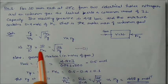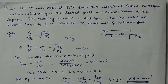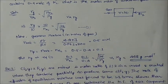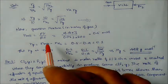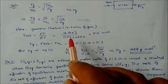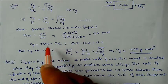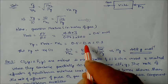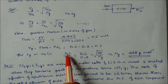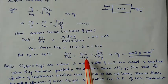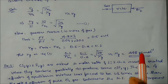Rate of N2 / rate of unknown = √(M_g / 28). Since volume is proportional to moles and time is the same (10 min), we use the moles ratio. Using the ideal gas equation PV = nRT with P = 4.18 bar, V = 3 L, T = 300 K, we find total moles = 0.5. Since N2 moles = 0.4, unknown gas moles = 0.1. Substituting into the Graham's law equation: (0.4/0.1) = √(M_g/28), giving molar mass of unknown gas = 448 g/mol.